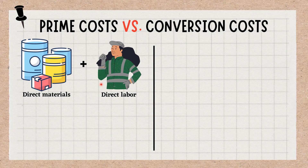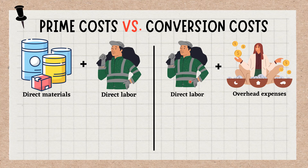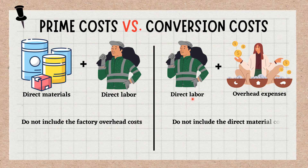The difference between the two cost classifications is that prime costs only relate to direct material and direct labor costs, while conversion costs only include direct labor costs and factory overhead costs. Thus, the essential difference is that prime costs do not include the factory overhead costs that are included in conversion costs, while conversion costs do not include the direct material costs that are included in prime costs. Conversion costs can be considered to layer on top of prime costs, where they are needed to convert raw materials into finished goods.